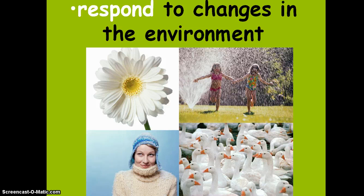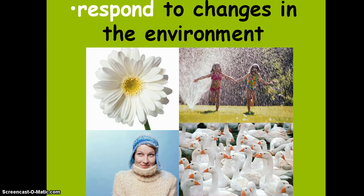Organisms must also respond to changes in the environment. Plants need to know how to get to the light, or their roots need to grow down — like Gravitropism, Geotropism, and Phototropism. The geese need to know how to migrate. People need to know how to dress warmly for the weather, and others deal with hot weather by cooling off.